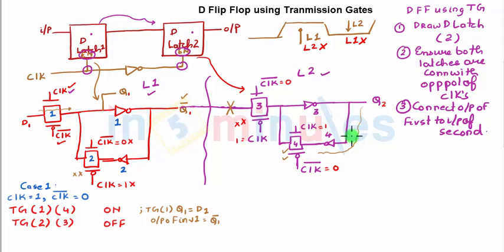So currently, my Q2, because transmission gate 4 is on, my Q2 previous value is being held. And this is what's happening when clock is 1 and clock bar is 0.